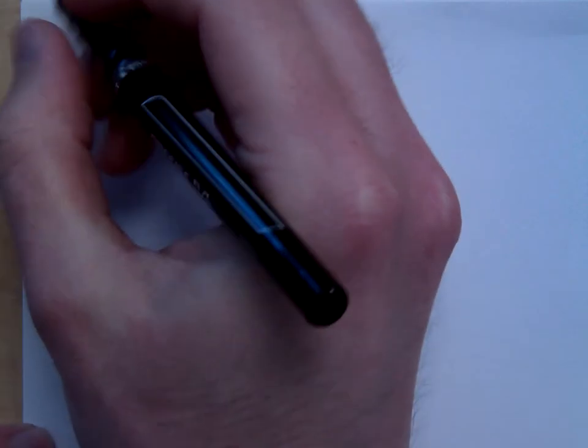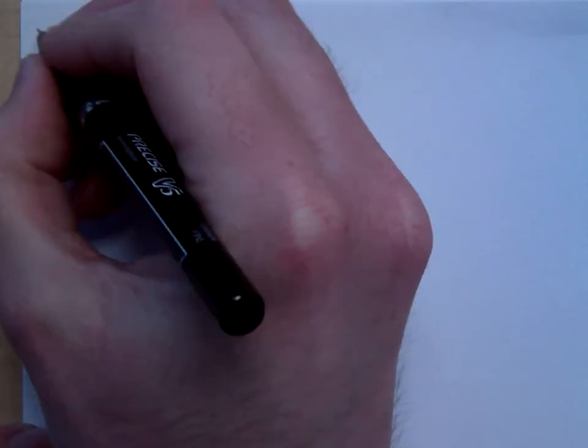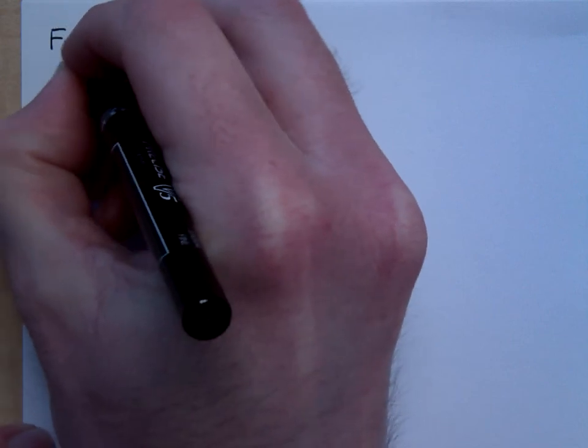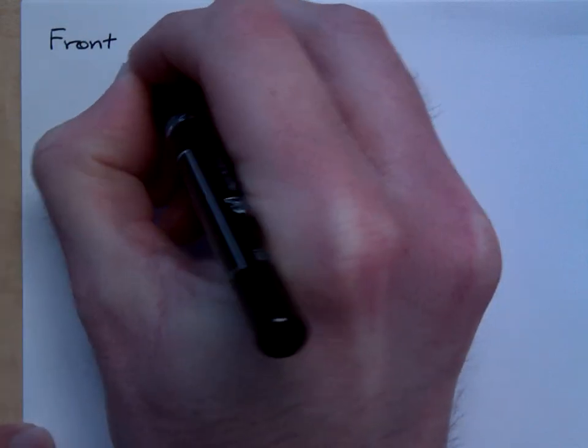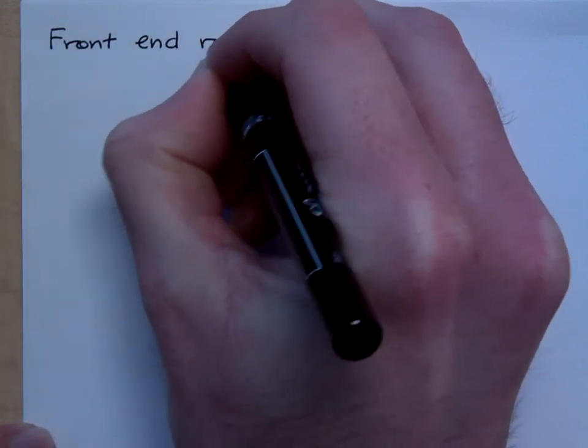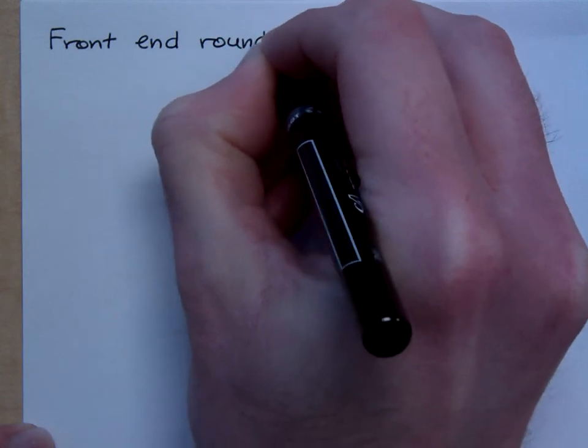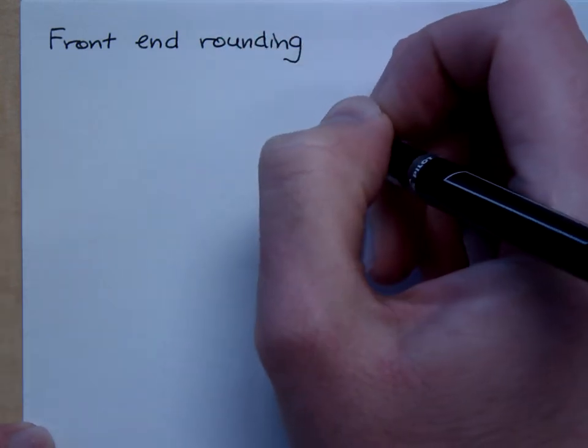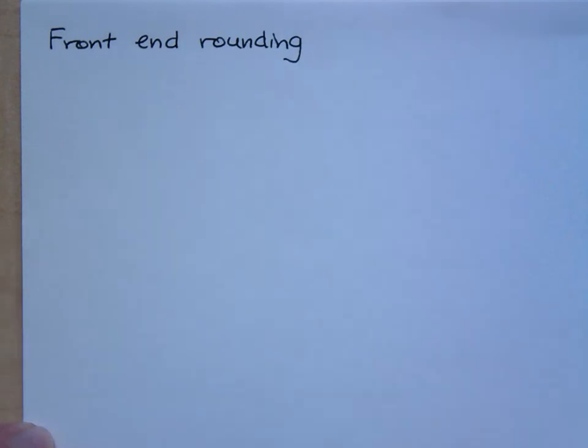Alright, so we just talked about normal rounding and estimating, rounding to a specific place. Now the book also talks about something called front-end rounding. Now I'm not the biggest fan of this, but you need to know what it is because you'll see problems like this even on your final exam.